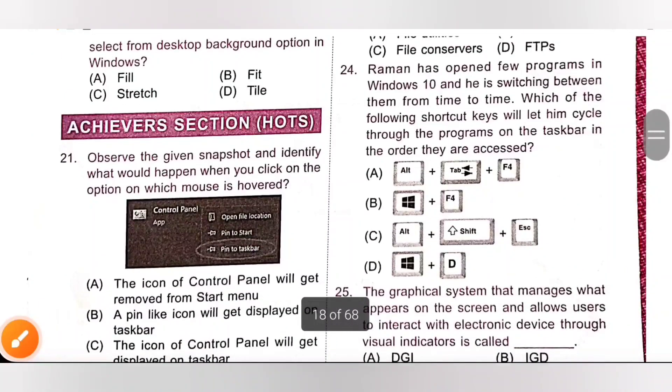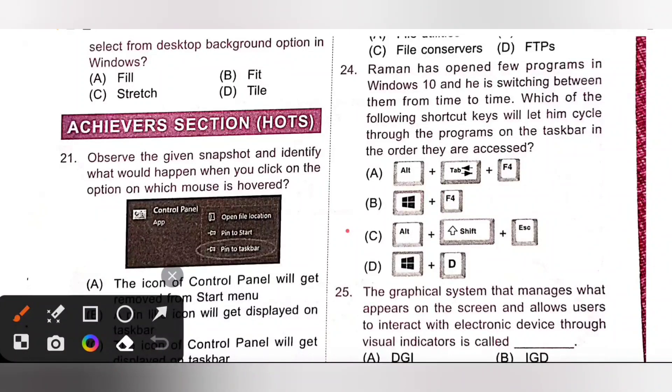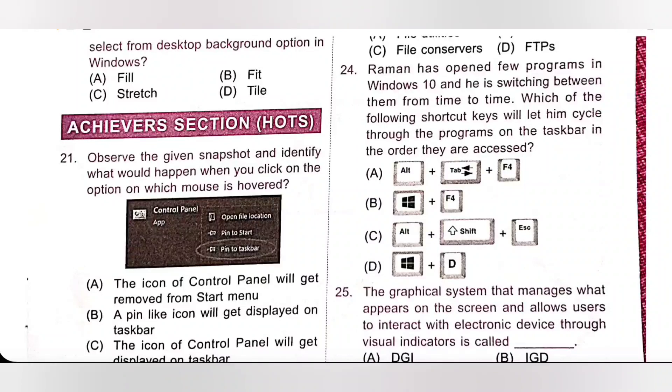Next. Raman has opened few programs in Windows 10 and he is switching between them from time to time. Which of the following shortcut keys will let him cycle through the programs on the taskbar in the order they are accessed? Shortcut key is Alt, Shift plus Escape. Option C is the correct answer.